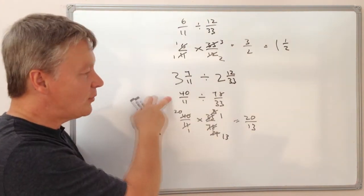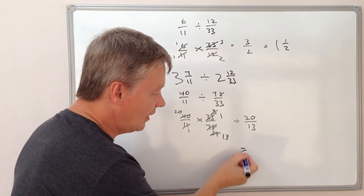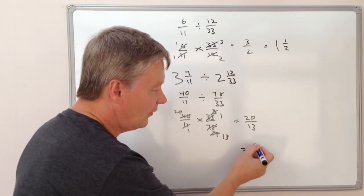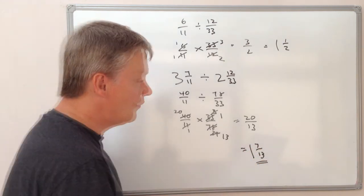So it means the answer to this question if I convert that back again is 1 whole and then 7 thirteens left over.